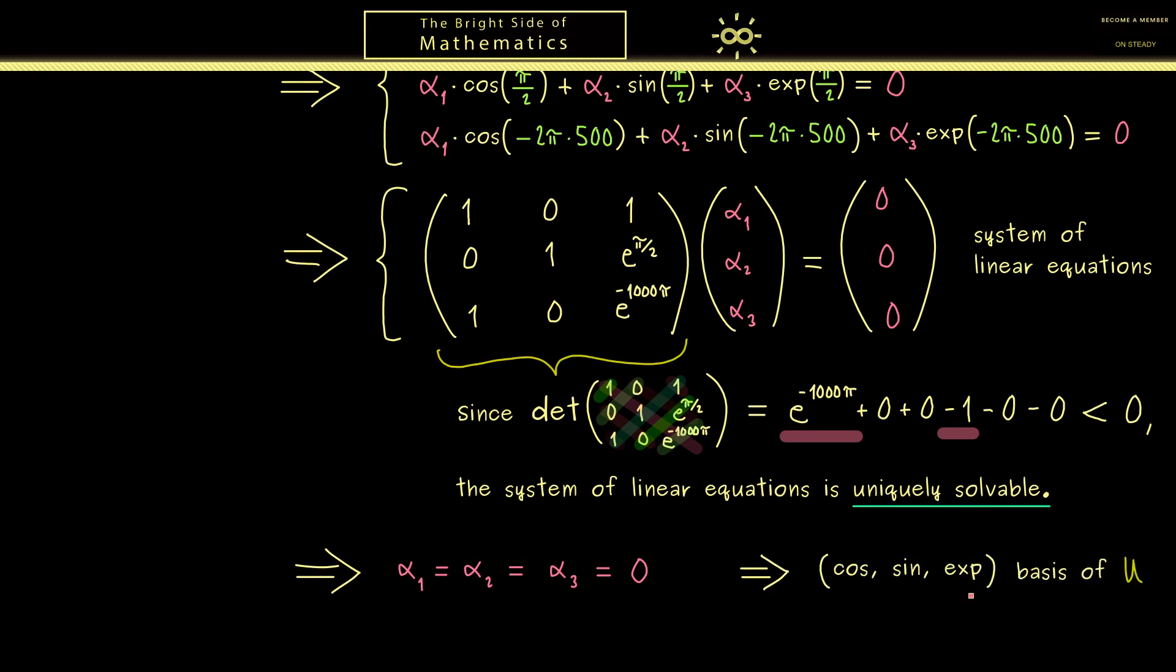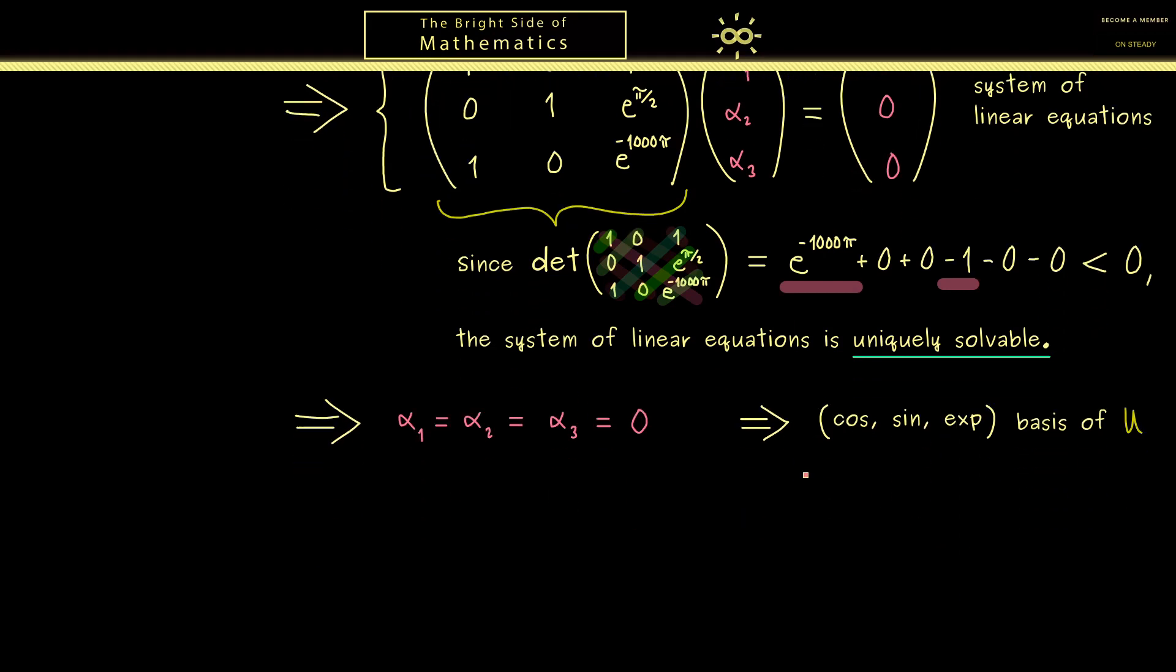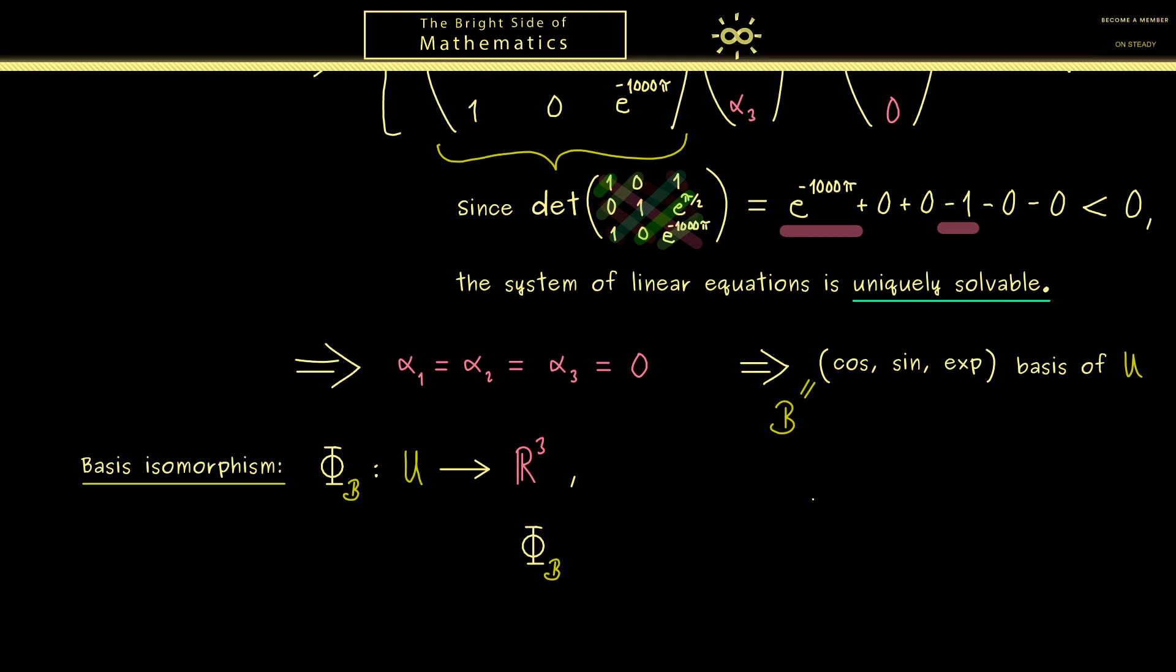And with that knowledge, we are now able to write down the basis isomorphism we have learned in the last video. And there you might recall, the symbol we have chosen for that is a capital Φ. The only thing we need in addition is that the basis also has a name. And the common name we have there is just a curved B. Okay, and now what we already know is that Φ_B maps U into R³. More concretely, it's defined by mapping this basis B to the canonical basis in R³.